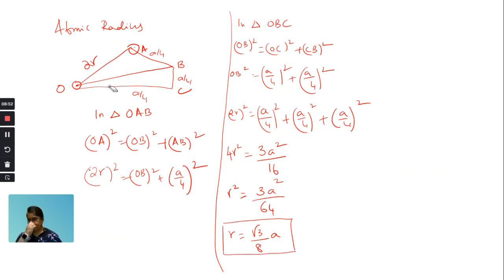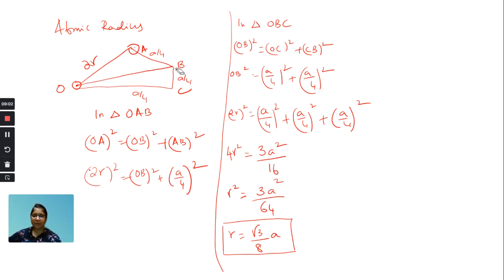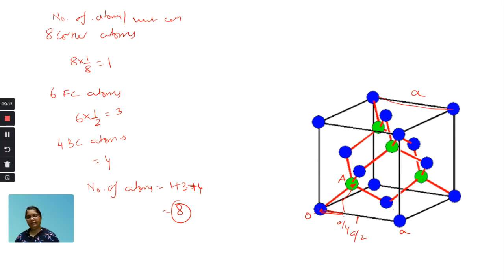This is the diamond atomic radius. You can say that these two nearest neighbors are separated by A/4 along each axis. So first we take the triangle and substitute to get the diamond atomic radius. The number of atoms per unit cell is 8 and the atomic radius is (√3/8)a — this could be a 4-mark question. In the next lecture, we will talk about NaCl structure.